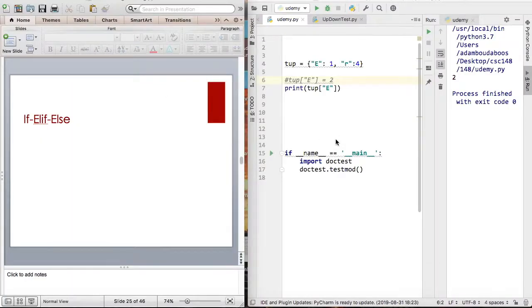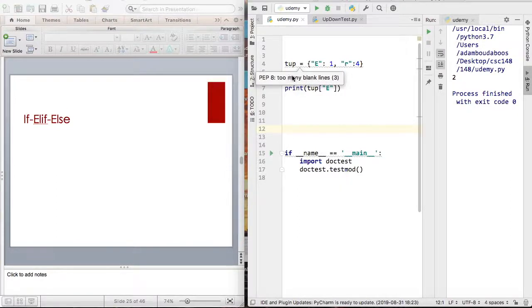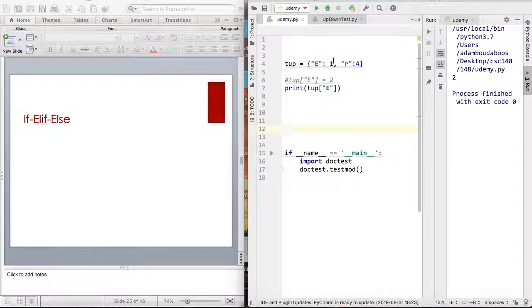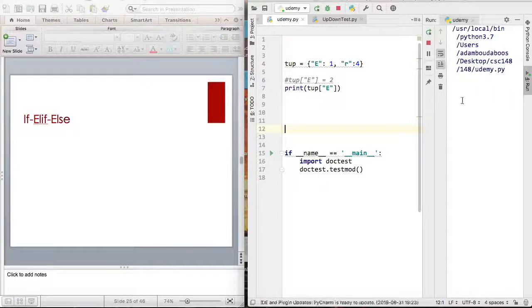I just want you to feel comfortable before going to that by doing some examples with dictionaries. I have a variable top and it has two keys which are e and r. E has value 1, r has value 4. So if I say print top of e, that's basically going to access e which should return back 1.